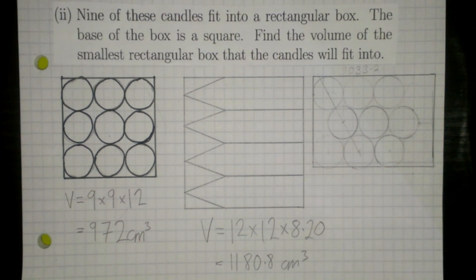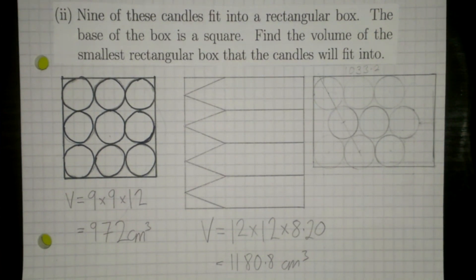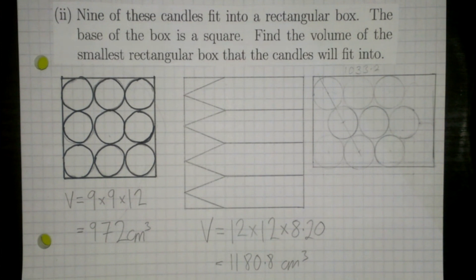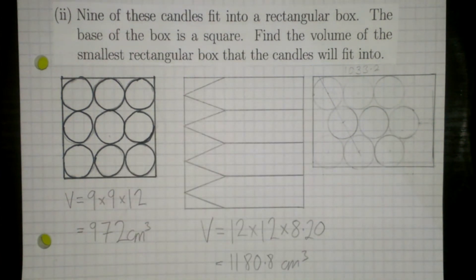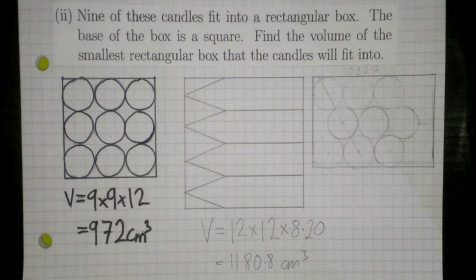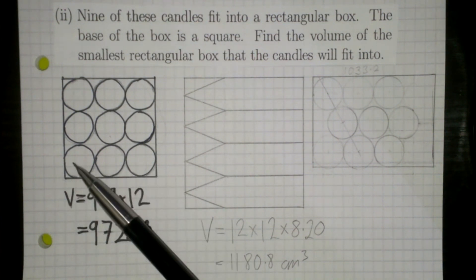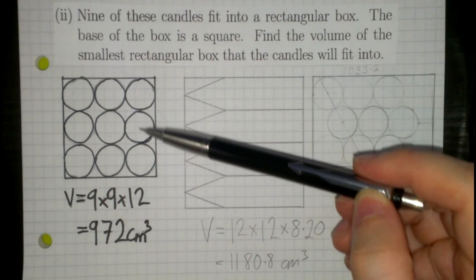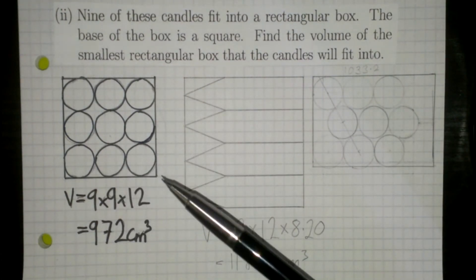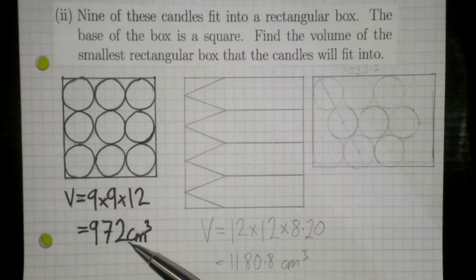In part two, nine of these candles fit into a rectangular box whose base is a square, and you have to find the volume of the smallest such box. The answer is the candles standing upright in a 3×3 arrangement. Each diameter is 3cm and there are three across, giving 9cm in each base direction, and the height is 12cm. The product of those three dimensions gives 9 × 9 × 12 = 972 cm³.